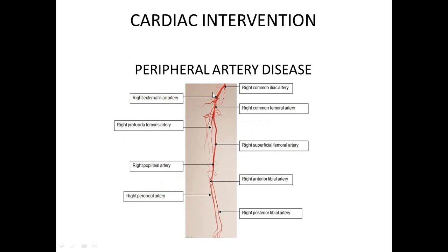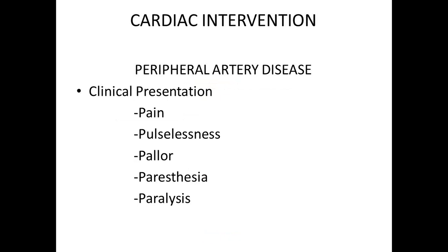The further divisions below the popliteal are: the anterior tibial, which runs anteriorly in front; the posterior tibial, which is more on the medial aspect of the leg; and the peroneal, which is more on the lateral aspect. Those are the main blood vessels in the lower extremity.